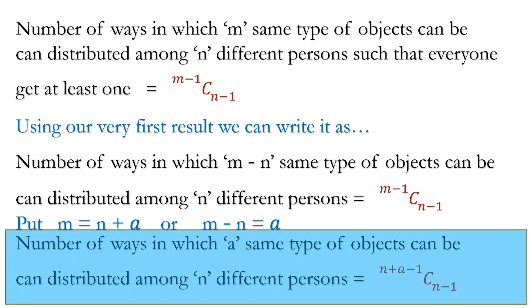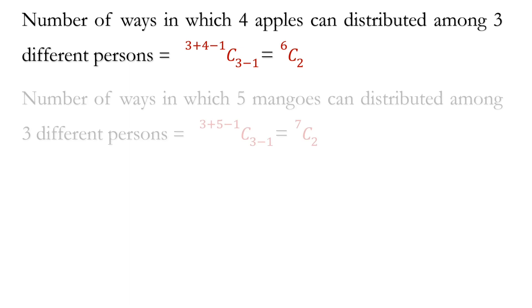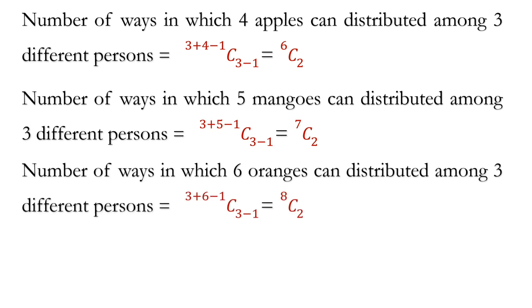Now we can apply this result to our fruits and persons. We get 4 apples can be distributed in 6 C 2 ways among 3 persons. 5 mangoes can be distributed in 7 C 2 and 6 oranges can be distributed in 8 C 2 ways. Since distribution of any one type of fruit is independent of distribution of another type of fruit.